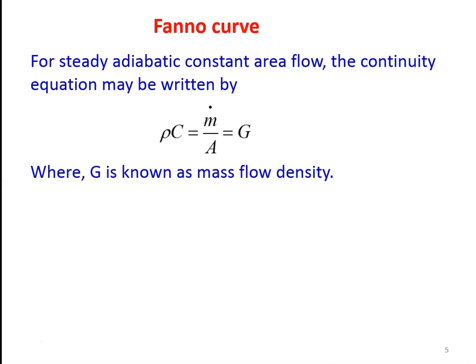We derive and draw the Fanno curve, which is the fundamental basic curve used for studying the Fanno flow process. Just as in isothermal, adiabatic, or constant volume processes we draw a curve representing the condition for that process, similarly for Fanno flow we draw a curve. We take the basic equations to draw the Fanno curve — starting with the continuity equation and energy equation for steady adiabatic constant area flow.